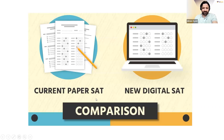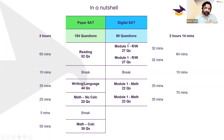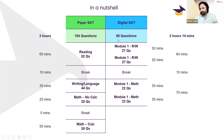Let's do a little comparison of the current paper test and the new digital SAT. Here's the summary sheet — you can take a screenshot of this. The paper test is three hours long, with 154 questions. The digital SAT has become two hours and 14 minutes, and instead of 154 questions, you're going to do only 98 questions — that's 56 questions less, and almost one hour less.